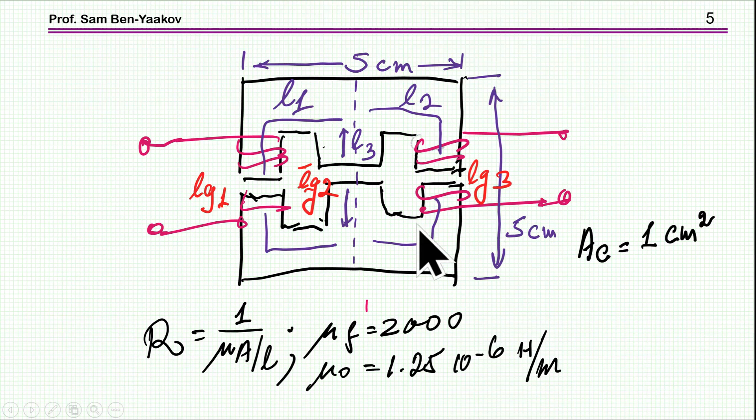Since I'm going to run simulation, I need some numbers, so I'm assuming an element which has a 5 cm on 5 cm side and the cross-section is 1 cm square, so we have here the primary, we have here the secondary. I'm assuming a relative permeability for the ferrite of 2000 and this is the definition of the reluctances. And of course, the μ₀ is the permeability in air or vacuum, which is 1.25 times 10⁻⁶ Henry per meter.